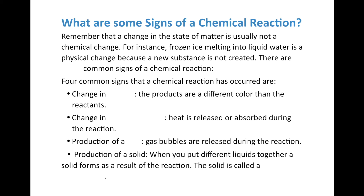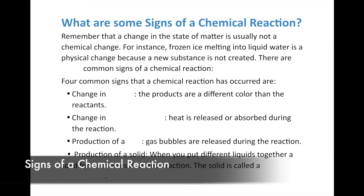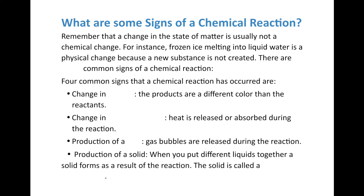Finally, what are some signs of a chemical reaction? There are four common signs. First, a change in color — the products are a different color than the reactants, like clear liquids combining to produce a new color. Second, a change in temperature — we'll talk later about exothermic and endothermic reactions, but a temperature change is an excellent sign. Third, the production of a gas — like the gas bubbles seen in electrolysis. Fourth, the production of a solid — when two liquids react and a solid forms, that solid is called a precipitate.